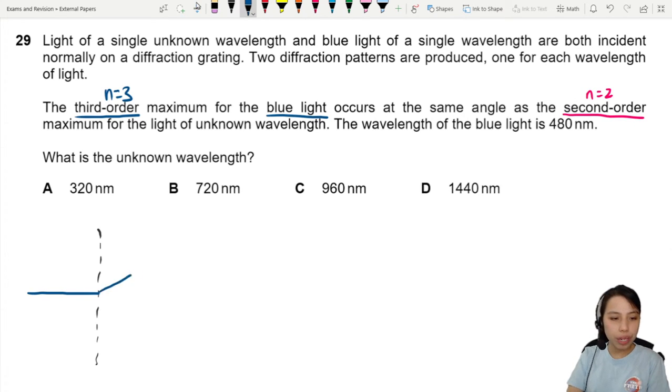Okay so blue is given to us, so let's draw that out. You have the blue which is third order for 480 nanometers, but you also have this mysterious other pink light. I don't know what this is. Maybe it's pink, maybe it's not. I just draw on here. This is second order and who knows what wavelength.